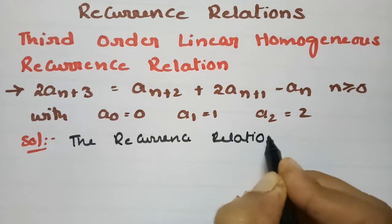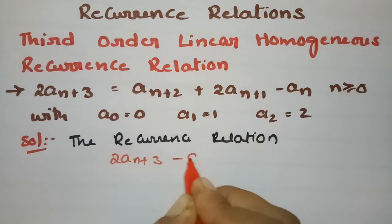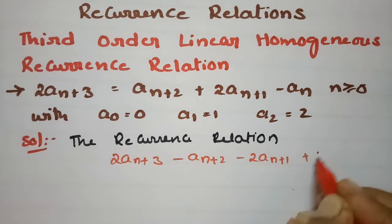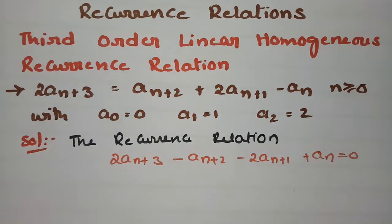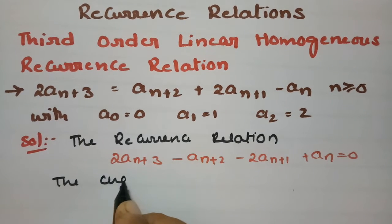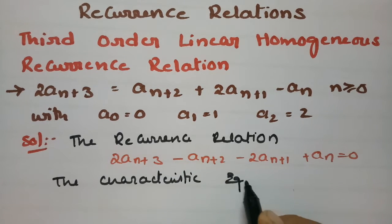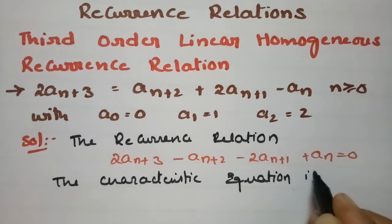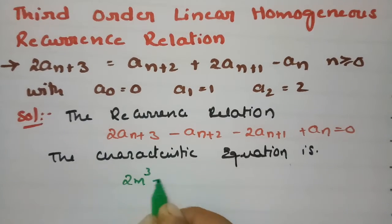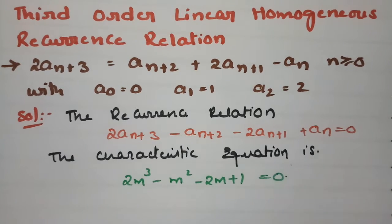The recurrence relation is rewritten as 2a(n+3) - a(n+2) - 2a(n+1) + a(n) = 0. The characteristic equation for this is 2m³ - m² - 2m + 1 = 0.